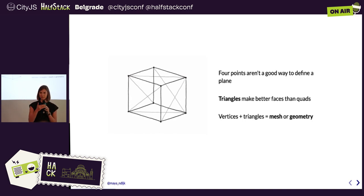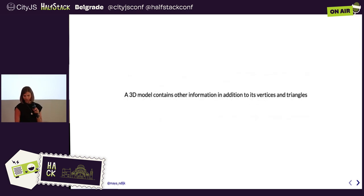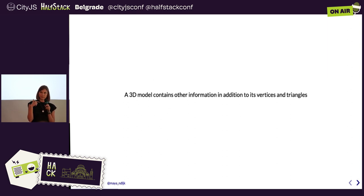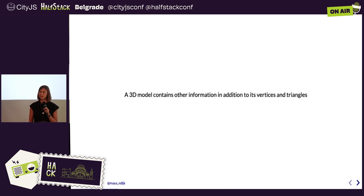Vertices plus the triangles they create are what we call a mesh or geometry. The dog in the previous example wasn't just a wireframe — it had a nice fluffy look to it. There's additional information that gets stored with each vertex, called attributes. We'll get more into that later.